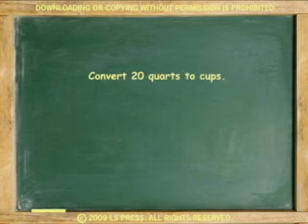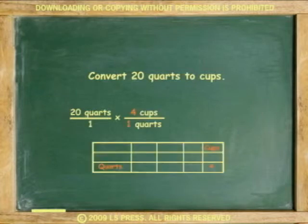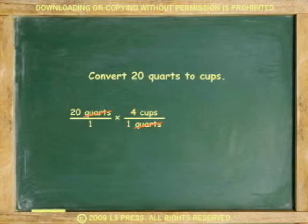Another example. Convert 20 quarts to cups. 20 quarts over 1 times 4 cups in 1 quart. Cancel the quarts. 20 times 4 is 80. 80 cups is the answer.